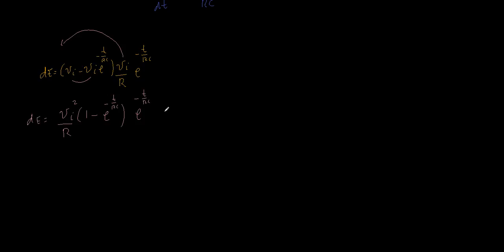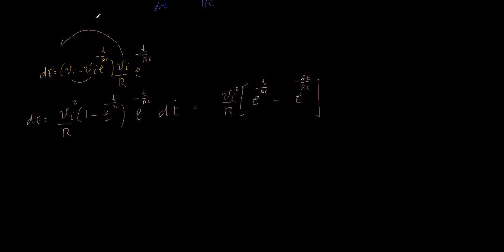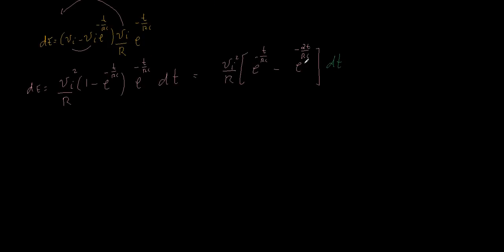Now let's separate this into two terms. This equals VI squared over R times e to the minus t over RC minus e to the minus 2t over RC, all times dt. The second term arises because when we multiply the two exponentials the exponents add, giving minus 2t over RC. Now we can integrate this with respect to time to get the final energy.